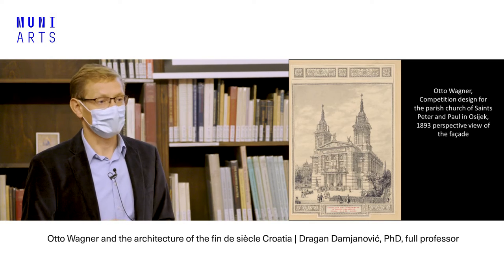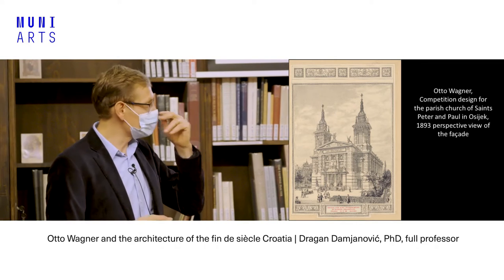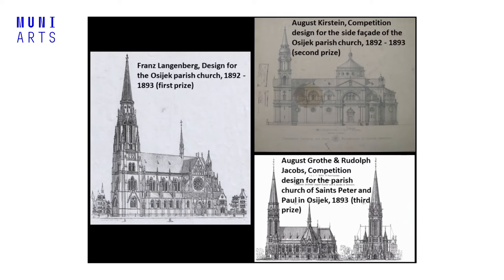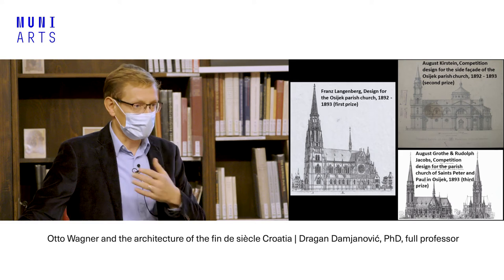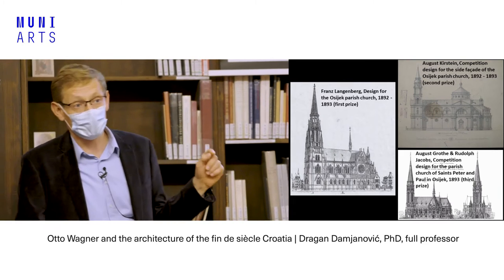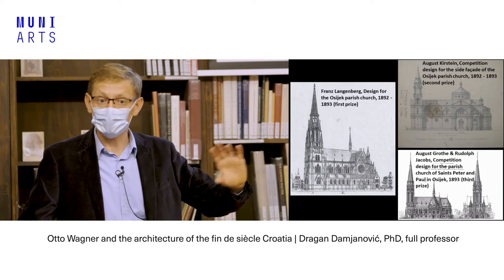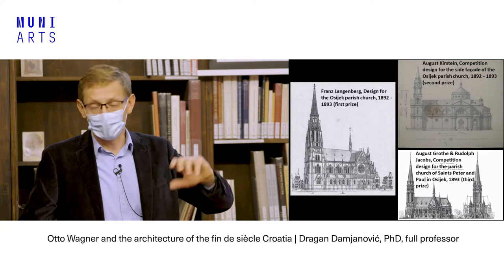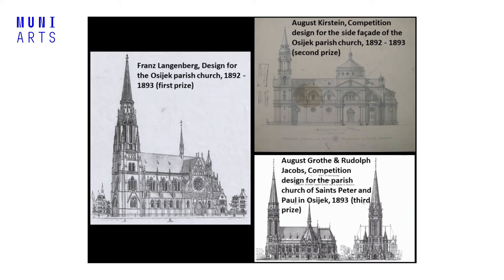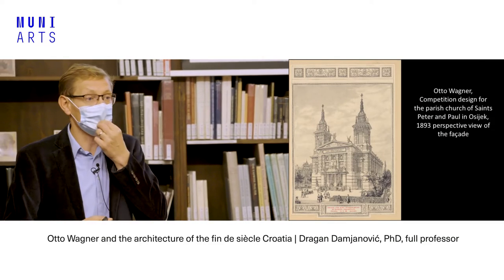The first prize went to German architect Franz Langenberg from Bonn — a neo-Gothic design. The second went to August Kirstein, the architect well known here in Brno because he restored your cathedral. He was then working on the restoration of Pécs Cathedral in southern Hungary, very near Osijek, which is probably how he heard of the competition. His design was somewhat neo-Renaissance. The third prize went to the neo-Gothic design of an architectural firm from Dresden, Grote und Jacobs.